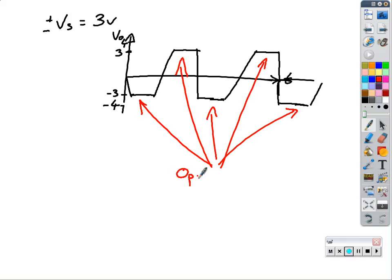So the op-amp saturates at these points. So it can't get any bigger than the 3, that is the Vs. Because Vs is equal to 3 volts, so plus and minus Vs is equal to plus and minus 3 volts.